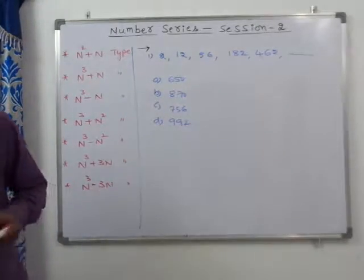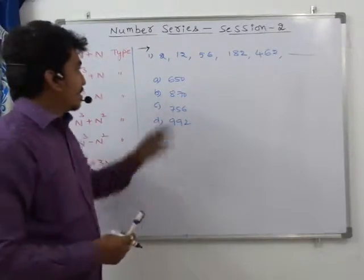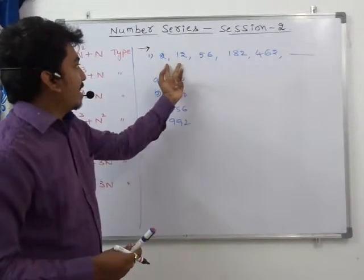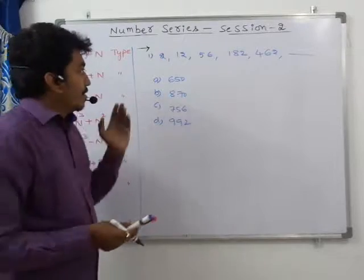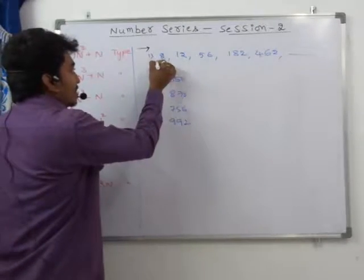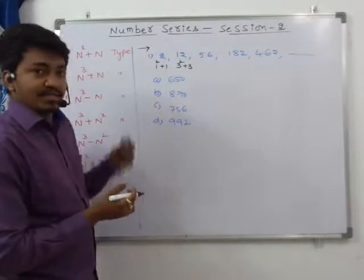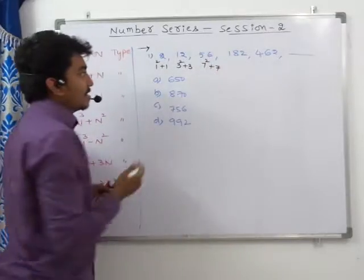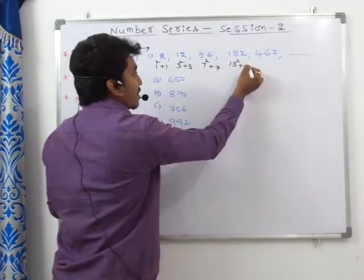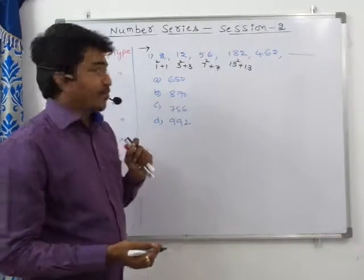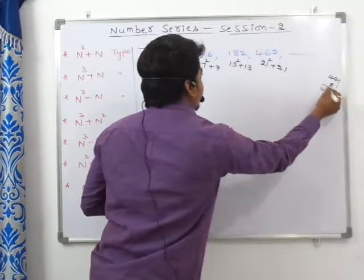Let us discuss this question. If we approach by using difference series, the difference is 10, then 43 — there is no symmetry. Now let us check whether these numbers are closer to any squares or cubes. We can write 2 as 1² + 1, 12 as 3² + 3 (9 + 3 = 12), 56 as 7² + 7 (49 + 7 = 56), 182 as 13² + 13 (169 + 13 = 182), and 462 as 21² + 21 (441 + 21 = 462).